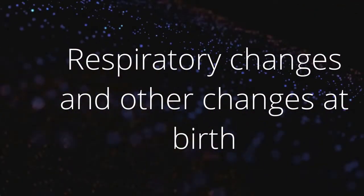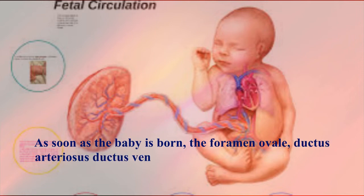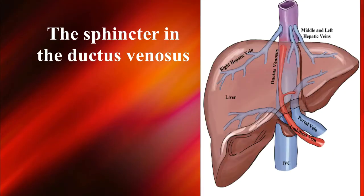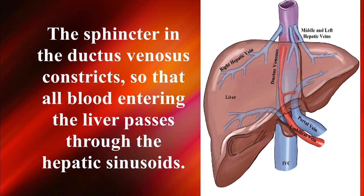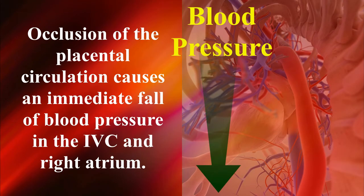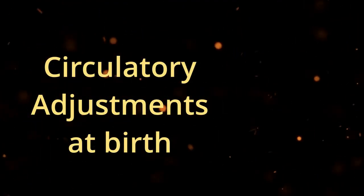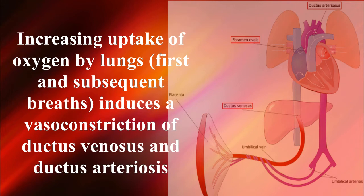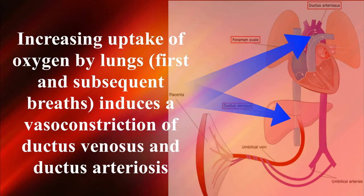Respiratory changes and other changes at birth. As soon as the baby is born, the foramen ovale, ductus arteriosus, ductus venosus, and umbilical vessels are no longer needed. The sphincter in the ductus venosus constricts so that all blood entering the liver passes through the hepatic sinusoids. Occlusion of the placental circulation causes an immediate fall of blood pressure in the IVC and right atrium. Increasing uptake of oxygen by the lungs with first and subsequent breaths induces vasoconstriction of ductus venosus and ductus arteriosus.